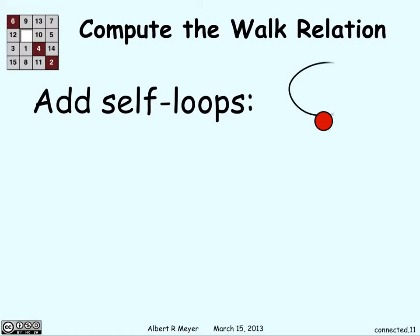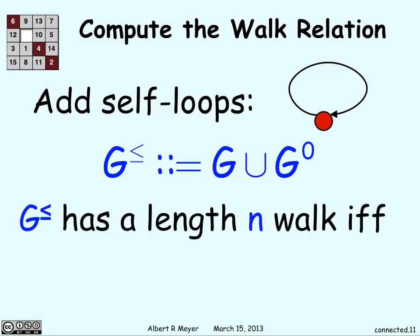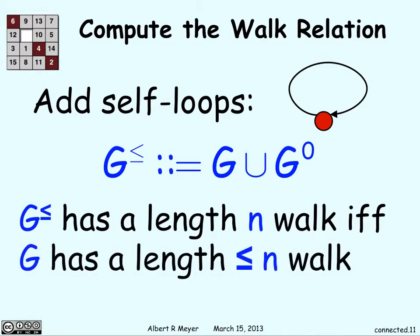And if we want to get the walk relation, you just get everything inside the graph and apply self-loops. So add in an edge that points back to itself for every vertex. And we call this G^≤, and it's basically G and then add in these G^0 self edges. And G^≤ has a length n walk if G has less than or equal to n walk.